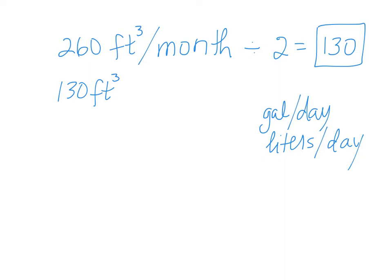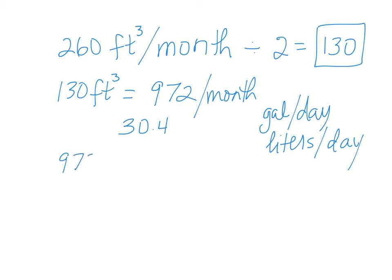So I've got cubic feet per month. First I'm going to change cubic feet into gallons. I have a handy phone app that converts things for me, and I find out that 130 cubic feet is equal to 972 gallons. And that's per month, so now I have to figure out how many days are in a month and do the division. Looking around online, the magic number seems to be 30.4, so if I divide 972 by 30.4 days per month, it gives me 32 gallons per day.